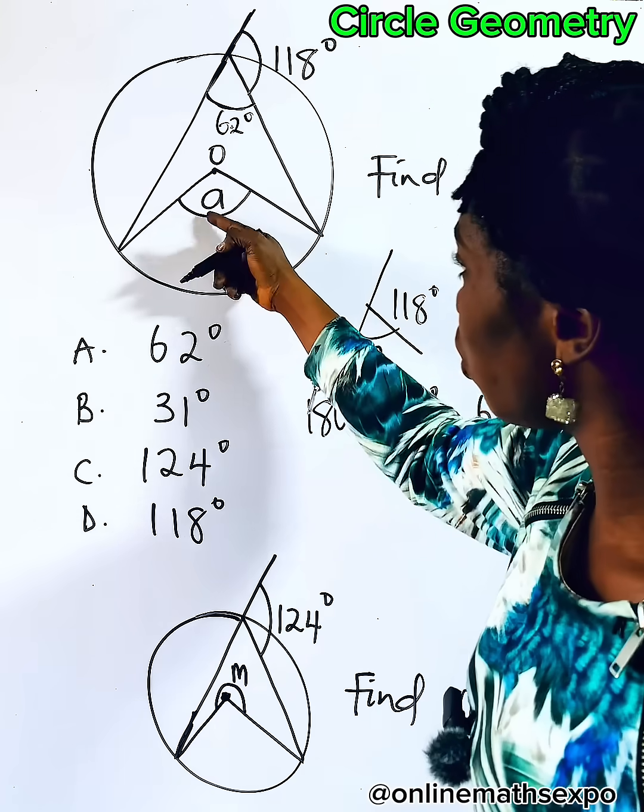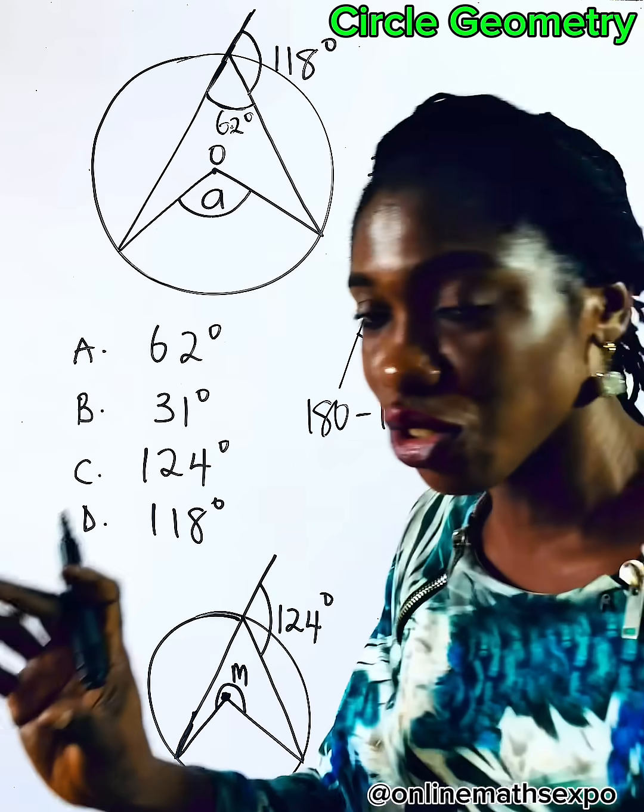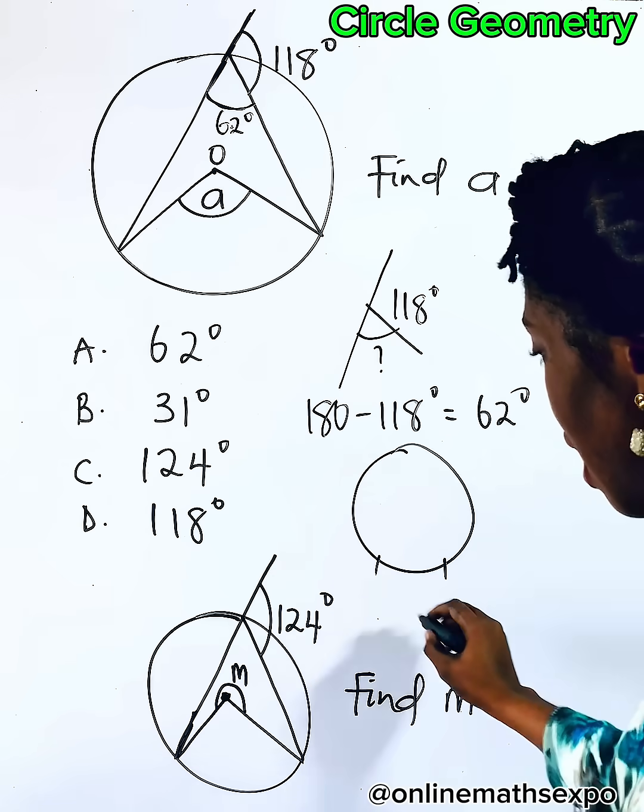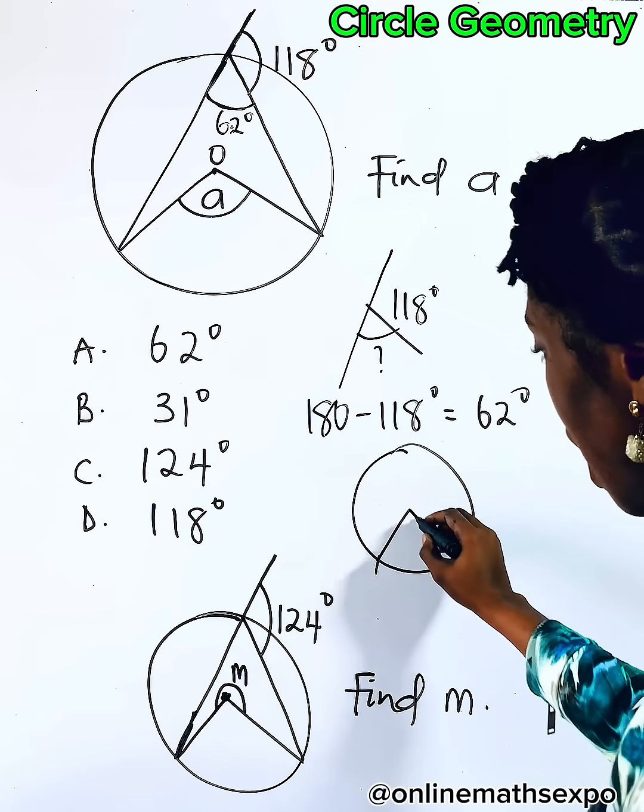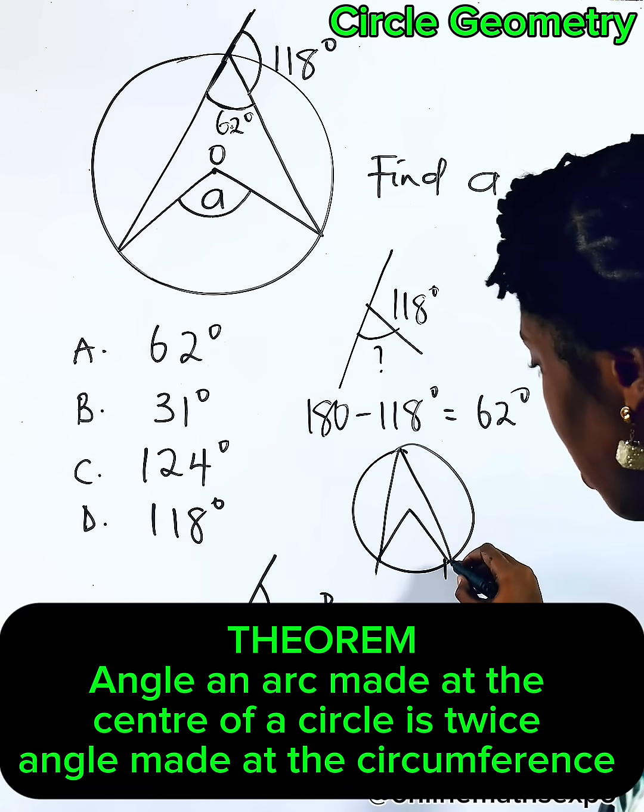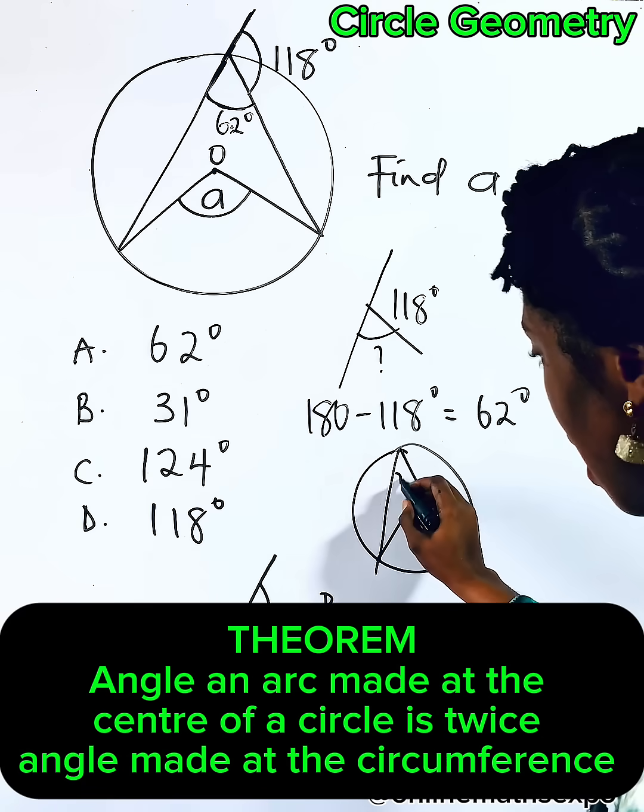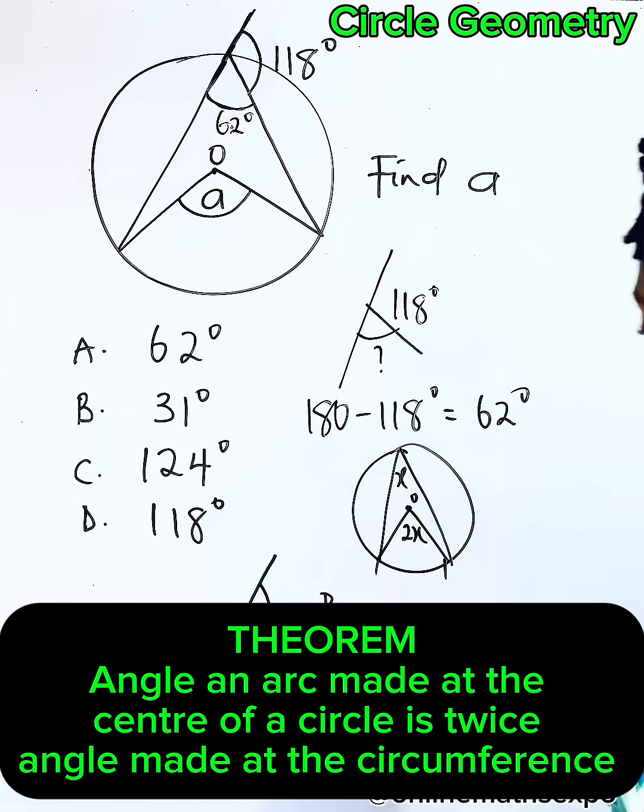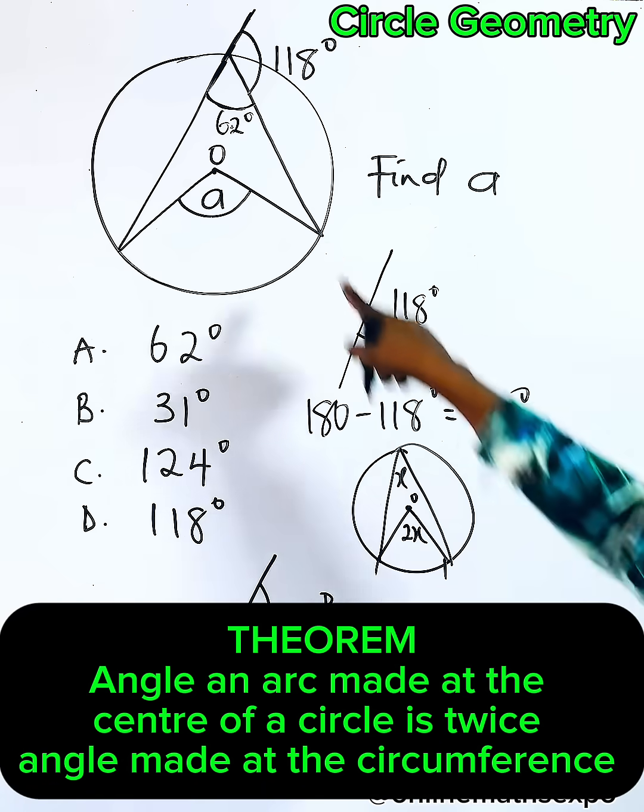Remember this theorem: for each time you have a circle and this part we say is the arc, when it forms angle at the center and also forms angle at the circumference, the angle—if here is x, the one at the center will be 2x.